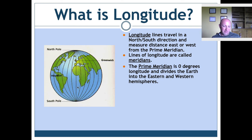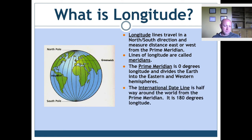The prime meridian is zero degrees longitude, and it divides the Earth into the eastern hemisphere and the western hemisphere. We live in the northern hemisphere and the western hemisphere. On the opposite side of the Earth from the prime meridian is a line called the international date line. It is 180 degrees longitude — just like there's no such thing as 91 degrees latitude, there's no such thing as 181 degrees longitude. 180 is the maximum.